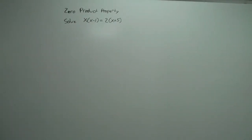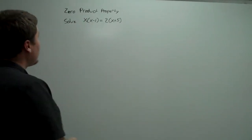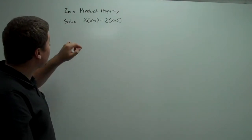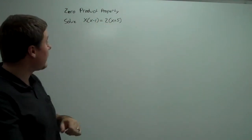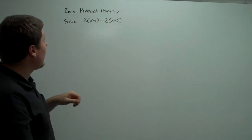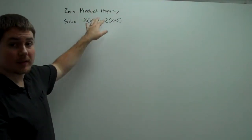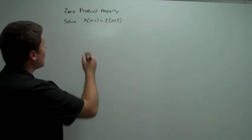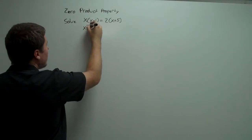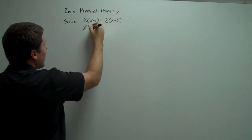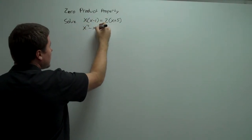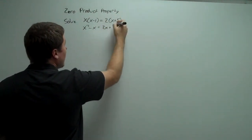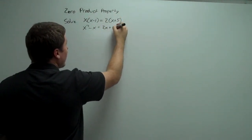For this next problem, we have an equality that's not already set up for us. We need to expand both of these binomials. Having this factored will help us check, but let's just expand first. So x times x is x squared, minus 1 times x is minus x, is equal to 2 times x, so 2x, plus 2 times 5, which is 10.